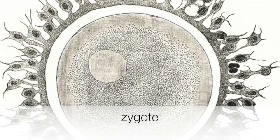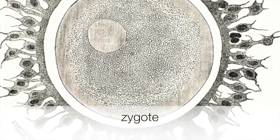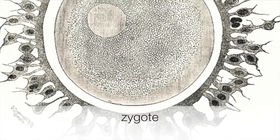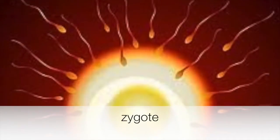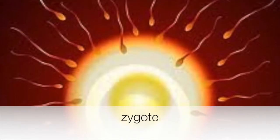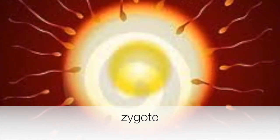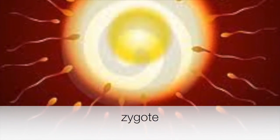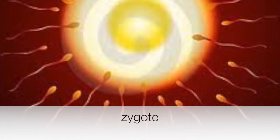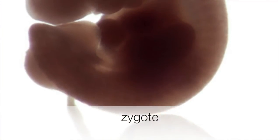A zygote takes about nine months to develop from a single cell into a fully formed human being. The rate of growth in the first few weeks is amazing. If you grow at the same rate after birth, you would be 4 meters tall at one month of age.